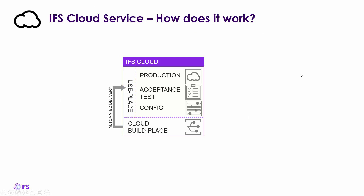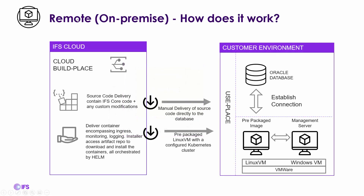If you're using IFS Cloud Service, IFS does everything — the build place, all delivery, updates, config and acceptance test and prod environments in the use place in Azure. For remote or on-premise, the source code grabbing, merging, building, and delivery process stays the same, but there's a prepackaged container VM image that you run on your site. You need a management server — a small Windows-based server to manage those packages — shipped as a Linux VM. VMware is recommended but other configurations are supported.